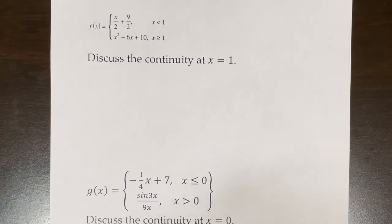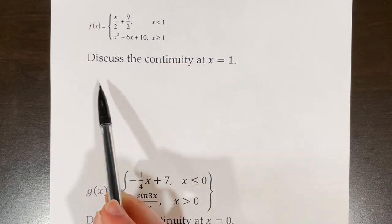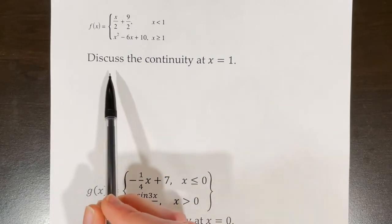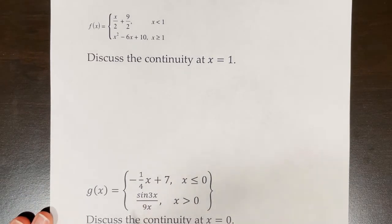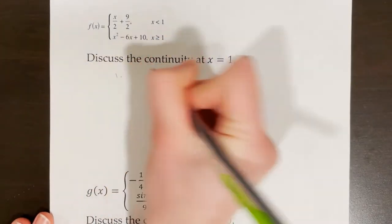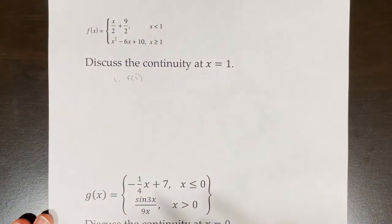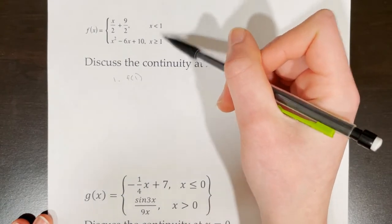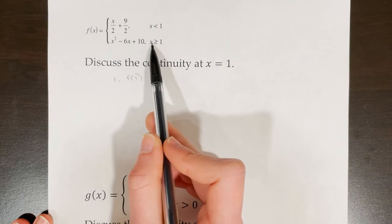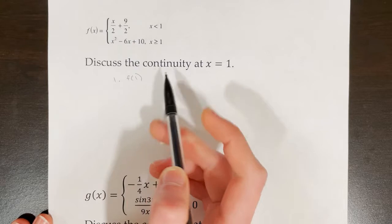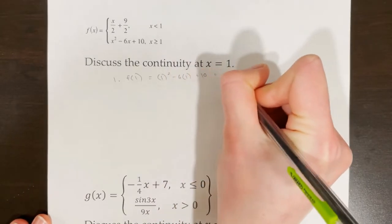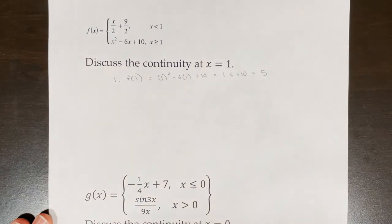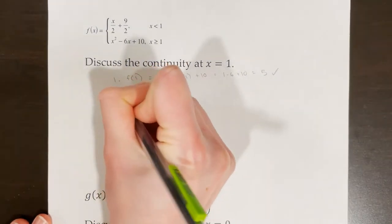A common way this skill is assessed on the AP exam is that it gives you a function and says 'discuss the continuity at a certain point.' Here we're asked to discuss the continuity at x equals one, meaning: is it continuous? Show your work and prove it. We'll go through the three steps. First, find f of one. We look at our domain restrictions to determine which piece to use — we pick the bottom function because x is greater than or equal to one. Plugging in: one squared minus six times one plus ten equals five. That number exists, step one is good.